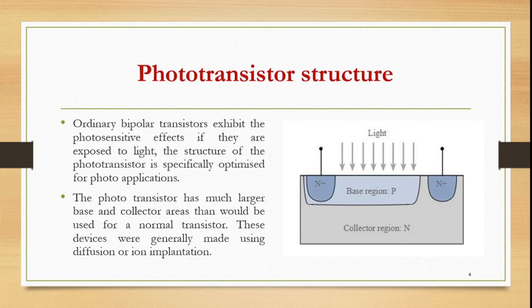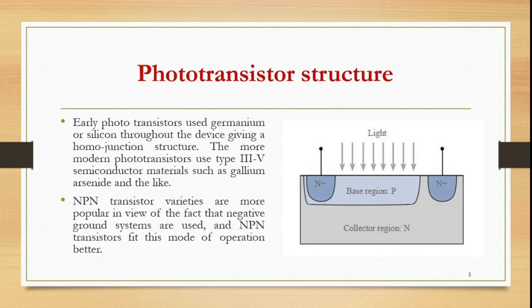Ordinary bipolar transistors exhibit a photo-sensitive effect if exposed to light, but the phototransistor structure is specifically optimized for photo applications. The phototransistor has a much larger base and collector area than would be used for a normal transistor. These devices are generally made using diffusion or ion implantation techniques. In a common transistor, germanium and silicon are used throughout — forming a homojunction structure — but in the phototransistor, Group III and Group IV semiconductor materials such as gallium arsenide are used.